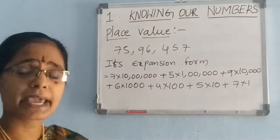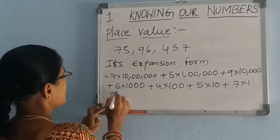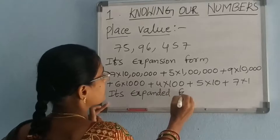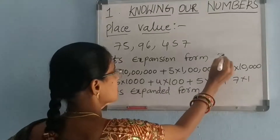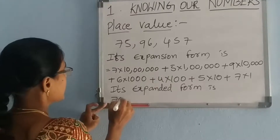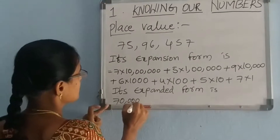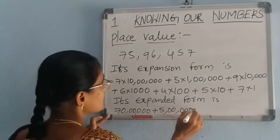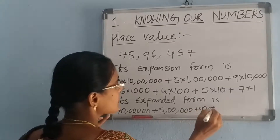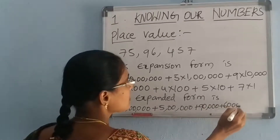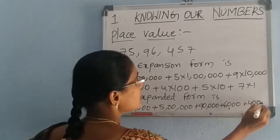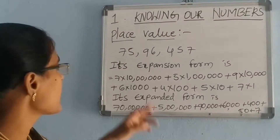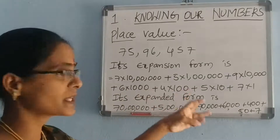Its expanded form is: 70 lakhs + 5 lakhs + 90,000 + 6,000 + 400 + 50 + 7. This is the expansion form and expanded form of the larger numbers.